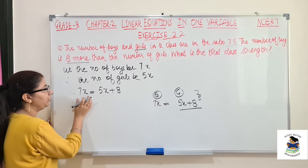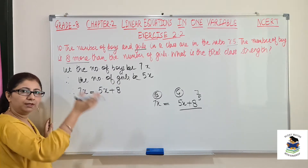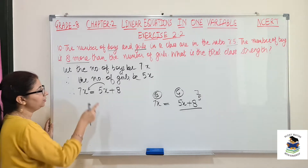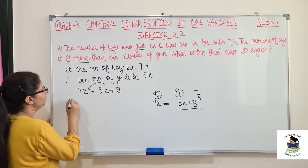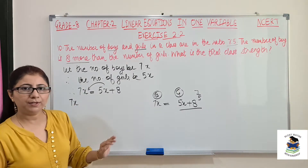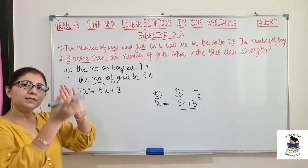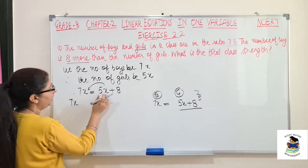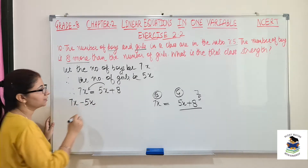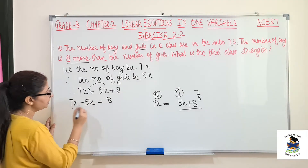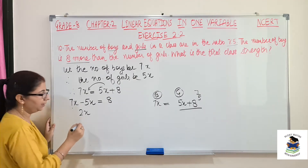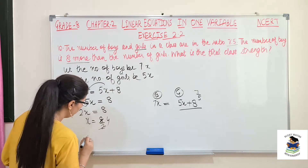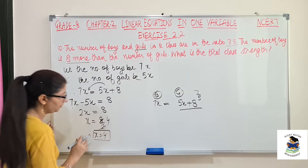Now let's solve this. There are variables on both sides, so I will shift 5x to the left-hand side. Since 5x is positive, it becomes minus 5x on the left. So 7x minus 5x equals 8, which gives 2x equals 8. Therefore x equals 8 by 2, so x equals 4.